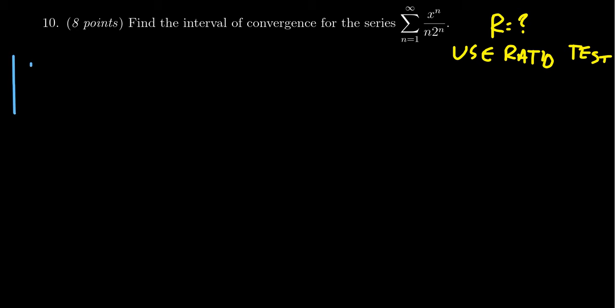With the ratio test, you look at the sequence of ratios, a_{n+1} over a_n, where we're looking at the sequence which we're adding together, including the power of x. So a_{n+1} becomes x to the n plus 1, and in the denominator you get n plus 1, and the power of 2 becomes 2 to the n plus 1. This is our a_{n+1} term.